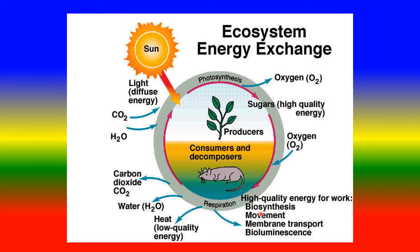High quality energy in the form of sugars from producers, along with oxygen, provides high quality energy for work. For consumers, this energy supports biosynthesis, movement, membrane transport, and bioluminescence. Through respiration, low quality energy is released as heat, water (H2O), and carbon dioxide (CO2), which feed back into the repeated cycle of photosynthesis. This is the Ecosystem Energy Exchange Cycle.